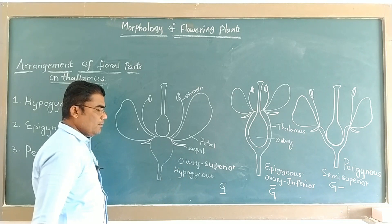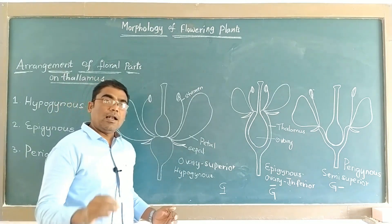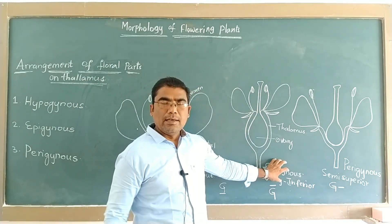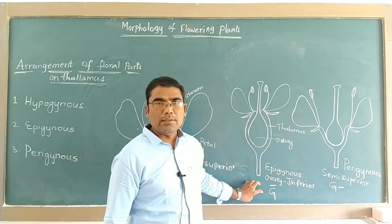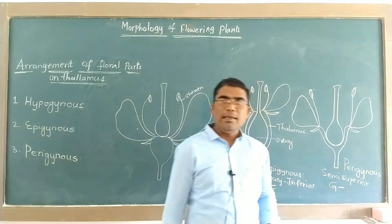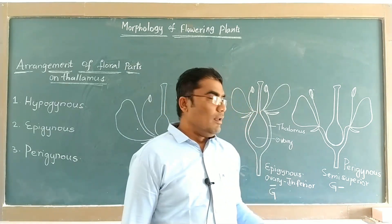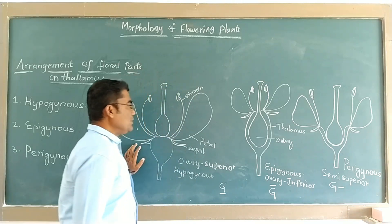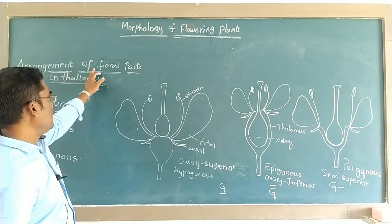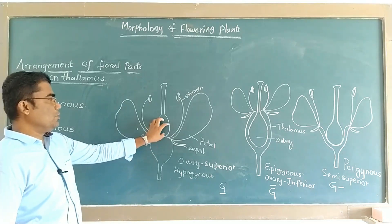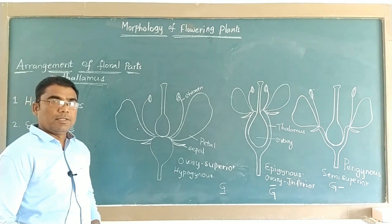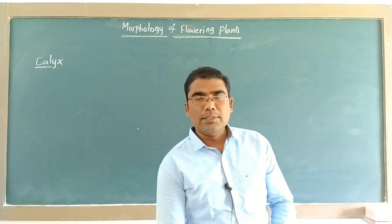Hypogynous is the flower — the condition is called hypogyny — example reported in China rose. The flower is called epigynous, the condition is called epigyny, and the example reported is guava. This is about the different types of flowers — hypogynous, epigynous, and perigynous — with respect to the arrangement of floral parts on the thalamus, mainly with respect to the ovary. Now we proceed with the next concept: calyx.